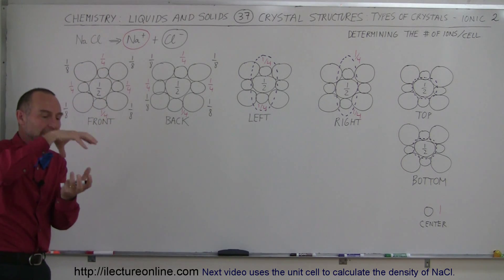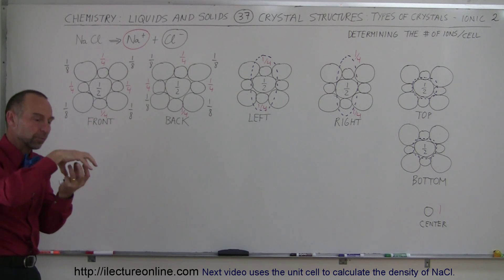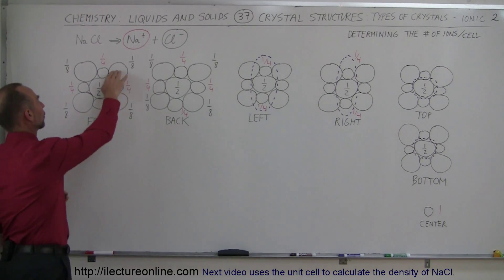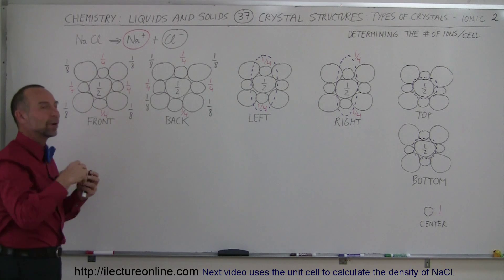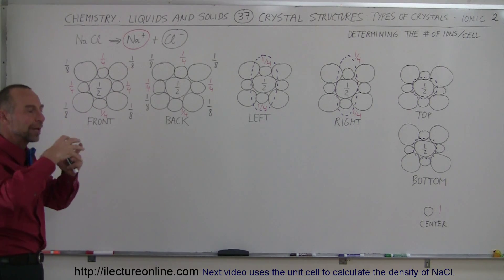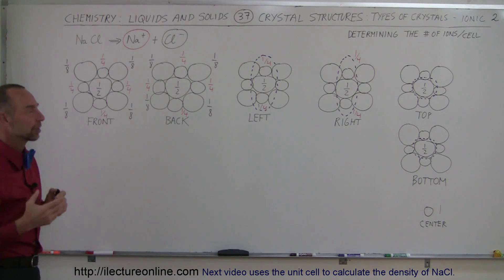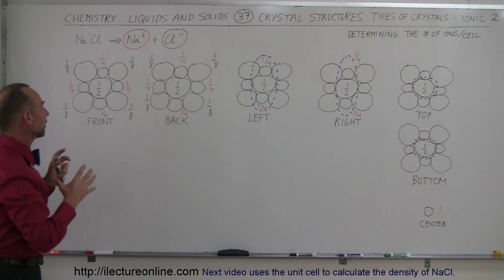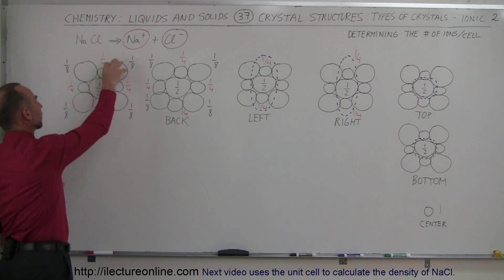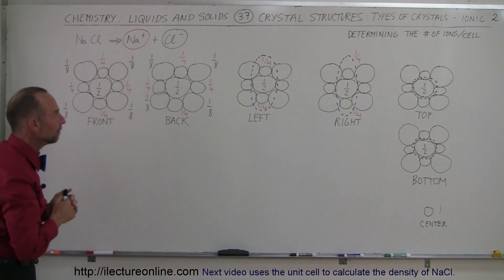The sodium ions are positive, so they're smaller — there are fewer electrons, so the electrons are pulled closer to the nucleus. The chlorine ions have one extra electron, so there are more repulsive forces between the electrons; they get pushed a little further out. Therefore the sodium ions are smaller and the chlorine ions are bigger, giving rise to this crystal structure.